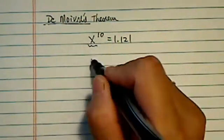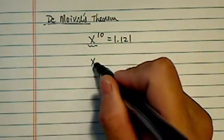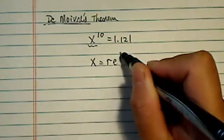In solving this one, we're going to assume x is a complex number, in that x is equal to r times e to the i theta.